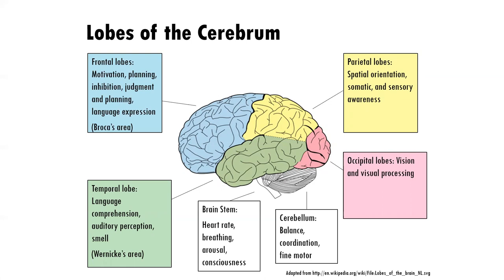Now let's look at lobes of the brain — they all work together. Frontal lobes, temporal, parietal, and occipital. You're most familiar probably with the frontal lobes, which are responsible for motivation, planning, inhibition, judgment, and language expression. You see things here such as executive function — making decisions about what to do in a situation, long-term planning, not just short-term. Broca's area is located in this area, responsible for language expression meaning spoken words.